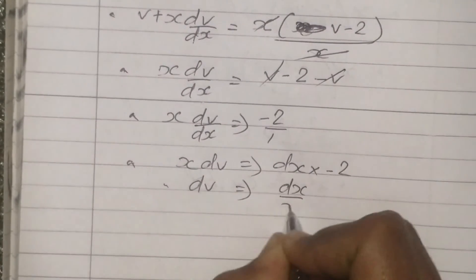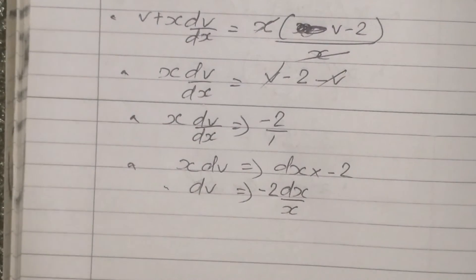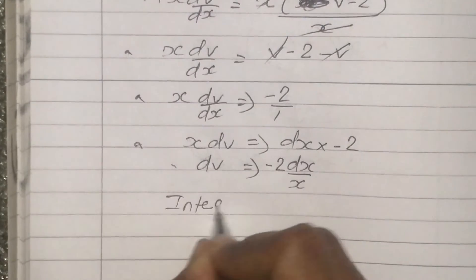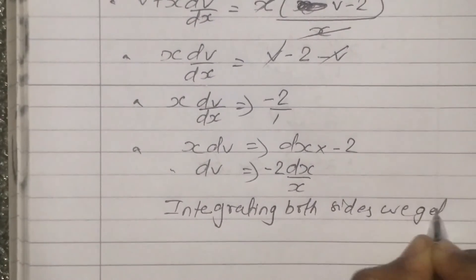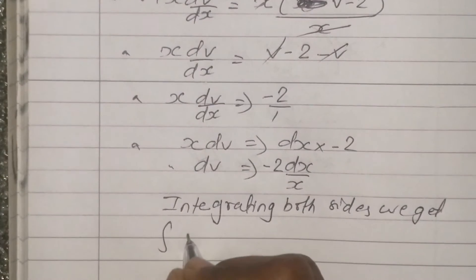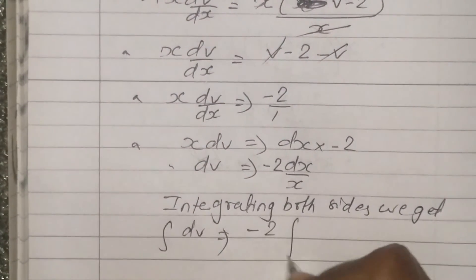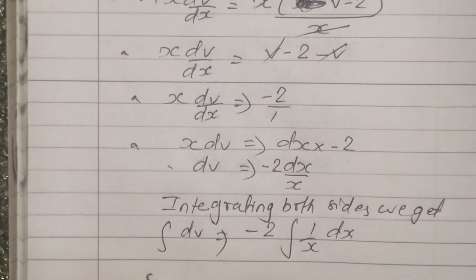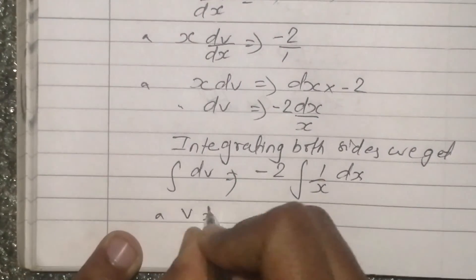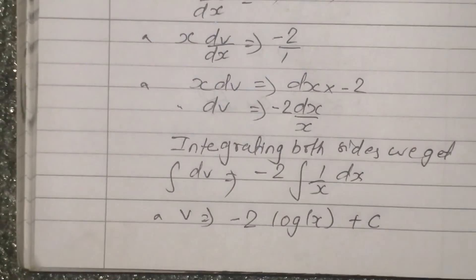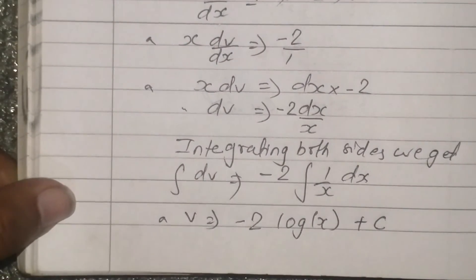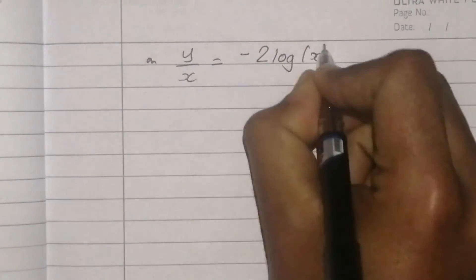Separating and integrating both sides: dv divided by (v minus 2) equals dx/x. Integrating both sides we get: v is equal to minus 2 times (1/x), giving log form — v equals minus 2 log x plus c. Since v = y/x: y/x equals minus 2 log x plus c.